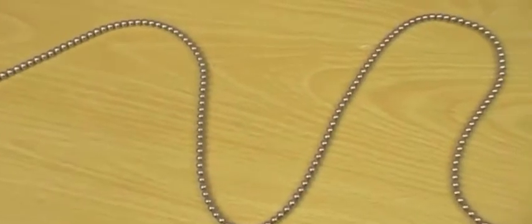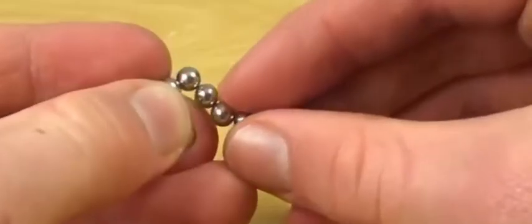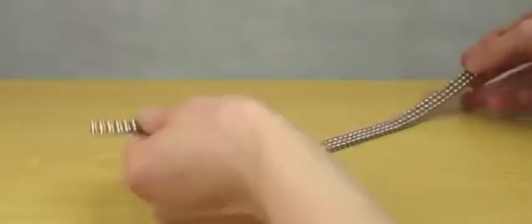Start by pulling Buckyballs out into a long string. Then fold them in on themselves, so they make 3 connected strands. Fold them again like this.